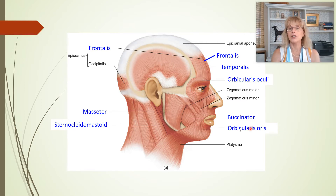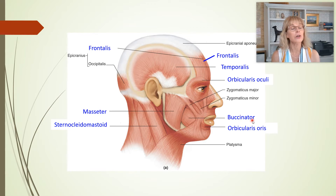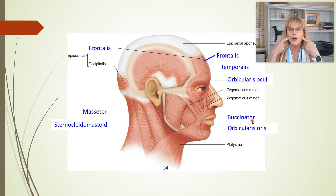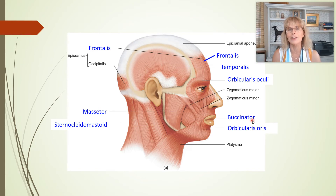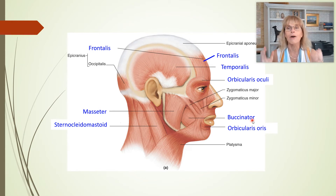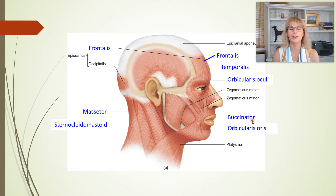Speaking of whistling, the buxinator is also used in whistling. The buxinator is right in here. If you're ever pulling in your cheeks to do that duck lip thing people do on selfies, you're using your buxinator muscle. Or if you're whistling, you're using the orbicularis oris and the buxinator.